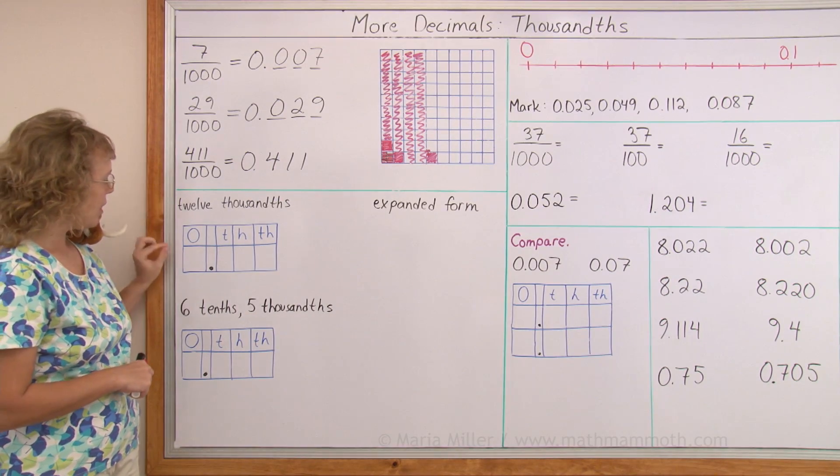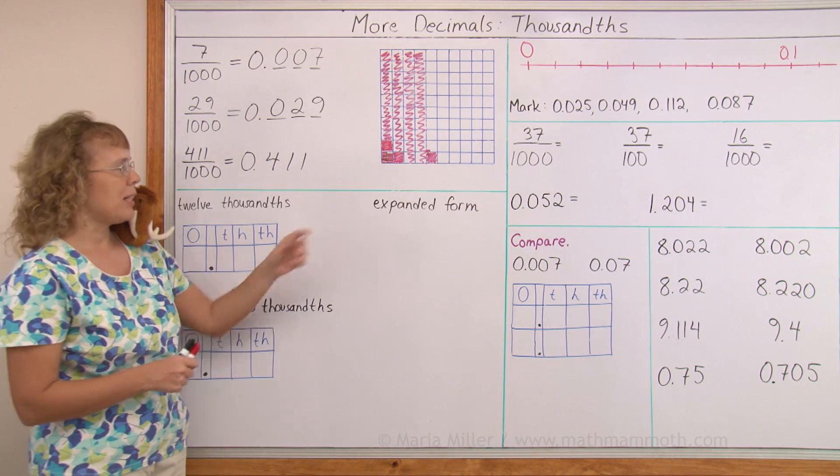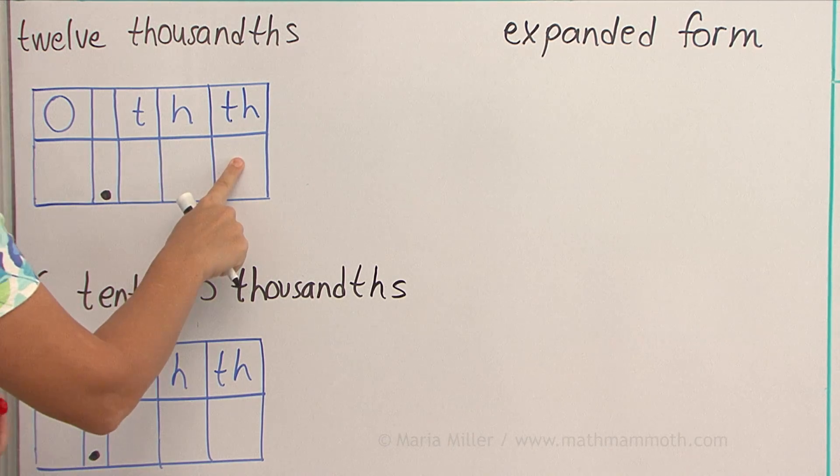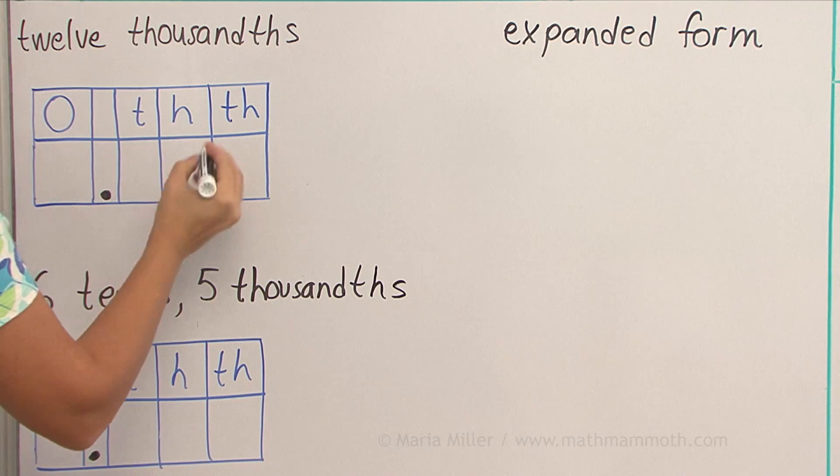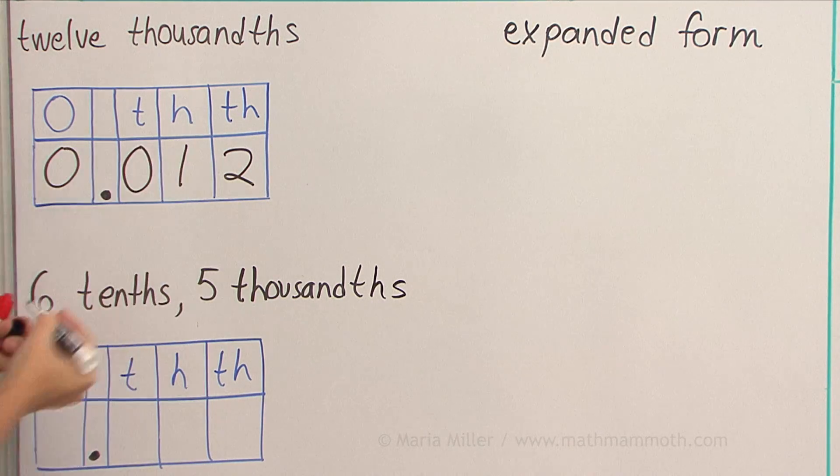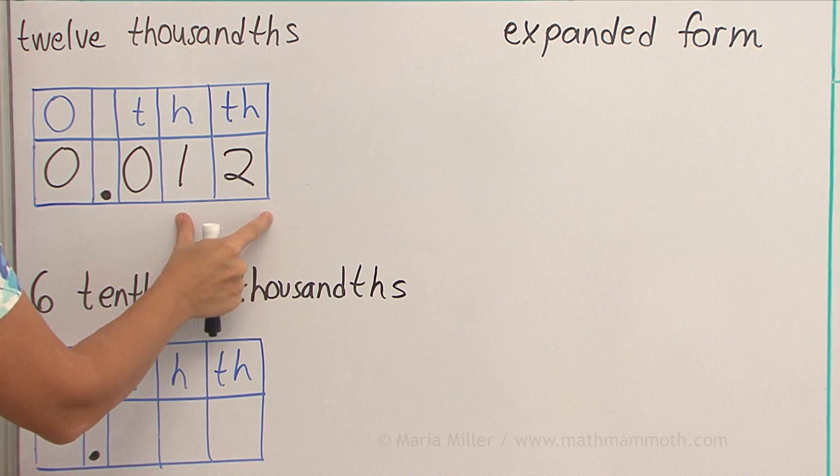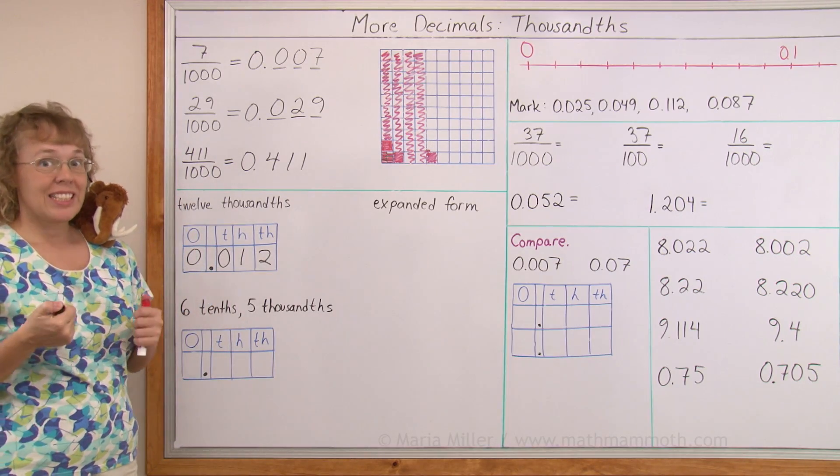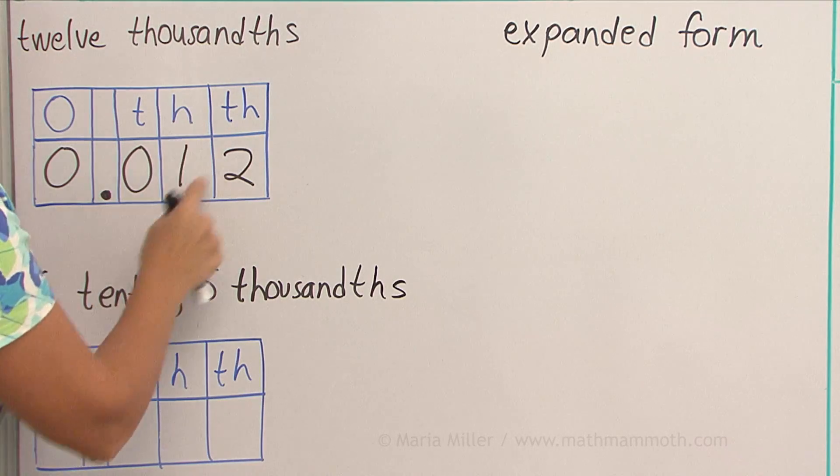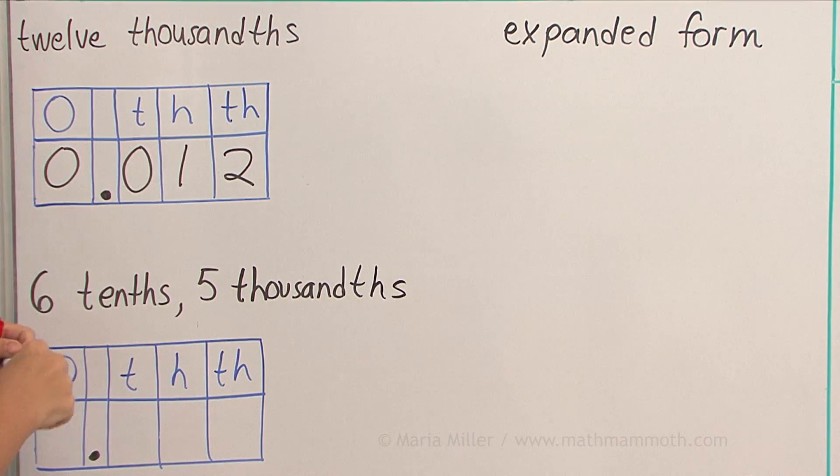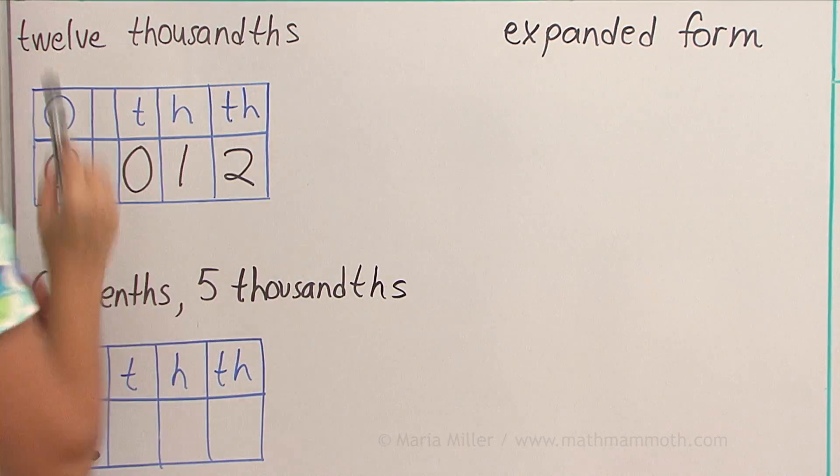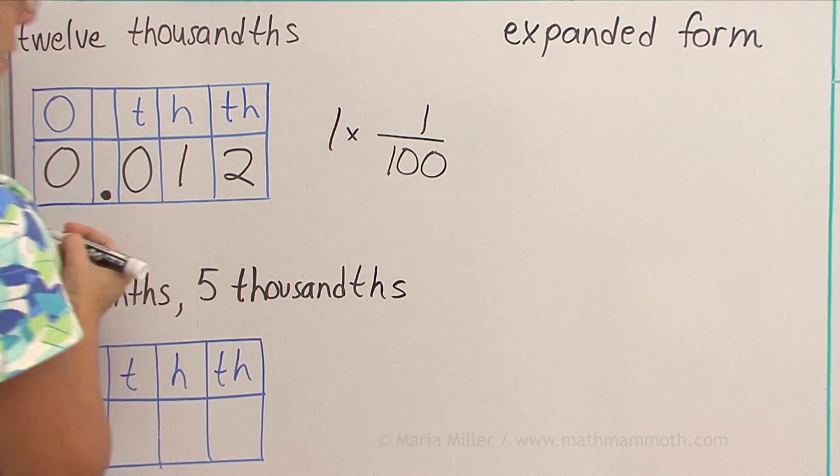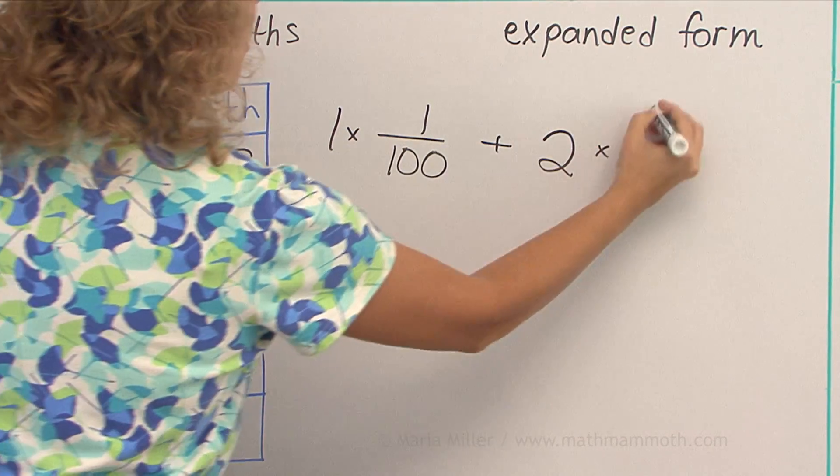Here we're going to write twelve-thousandths in this place value chart and then in expanded form. Here's my one's place, tenths place, hundredths and thousandths place. So twelve-thousandths goes like this. And like we just studied, even though it is twelve-thousandths, it is also at the same time one-hundredth and two-thousandths. To write it in expanded form we're going to write it as a sum, as an addition, of each one of these parts. So for this one I have one-hundredth and two-thousandths, so I'm going to write it as one times one-hundredth and then we have two of the thousandths, like that.